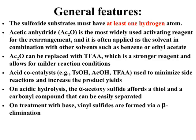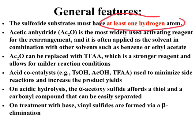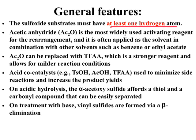General features of this reaction: the most important thing is that in the starting material, that is in the sulfoxide, at least one alpha-hydrogen atom should be present. If that hydrogen is absent and only different substituents are present, then the reaction will not occur. So we need at least one alpha-hydrogen atom.